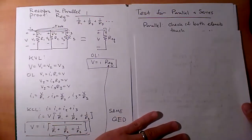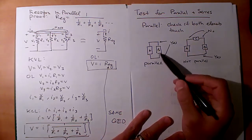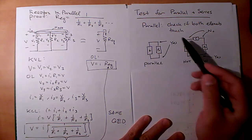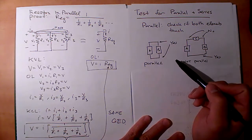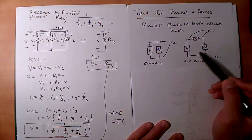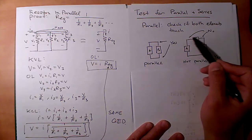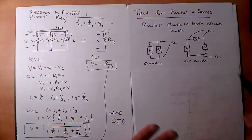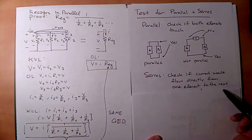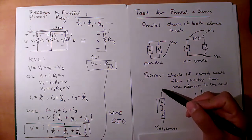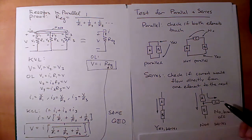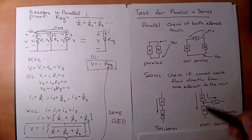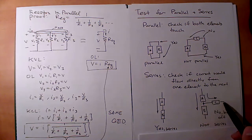Now let's look at a simple test for parallel and series. For parallel, check if both sides touch — top touches top and bottom touches bottom. For elements A and B, the bottoms touch, but there's element C in the way on top, so A and B are not in parallel. For series, check if current would flow directly from one element to the next with no other branch. If current could branch off to element C, those elements are not in series.